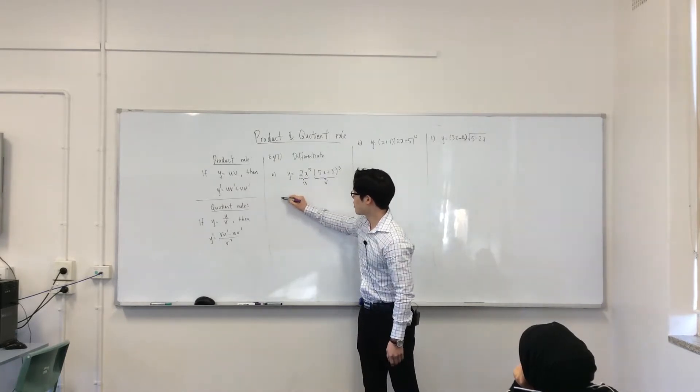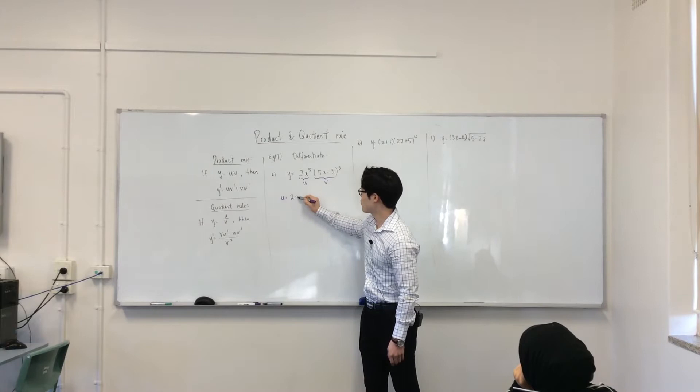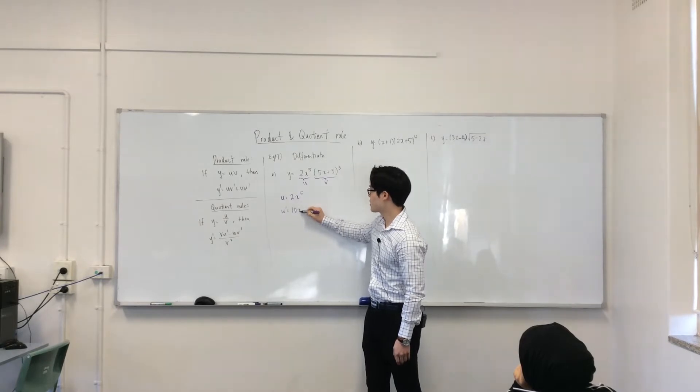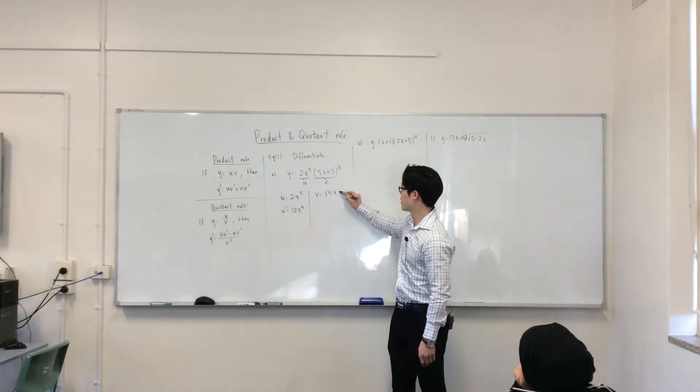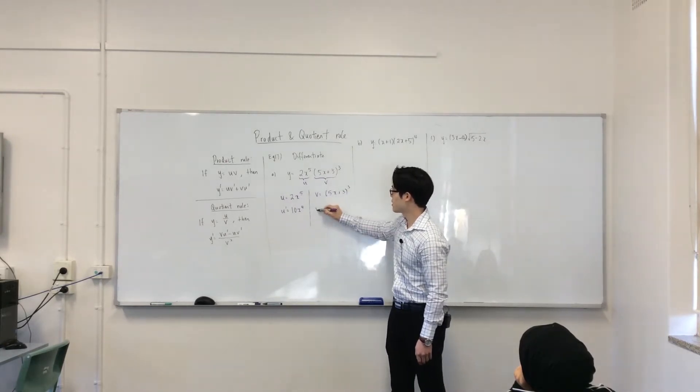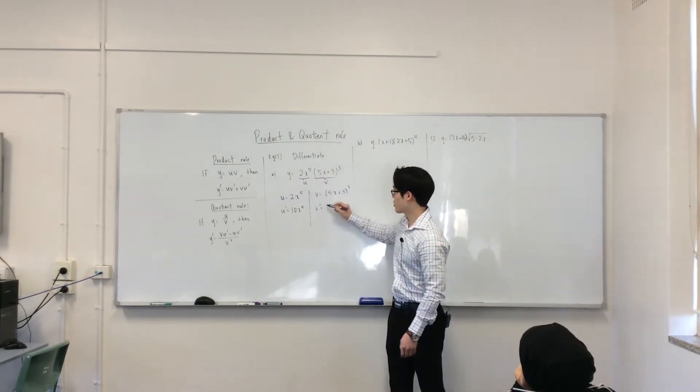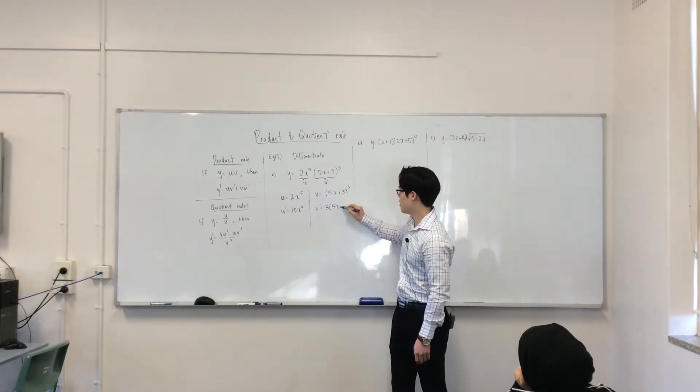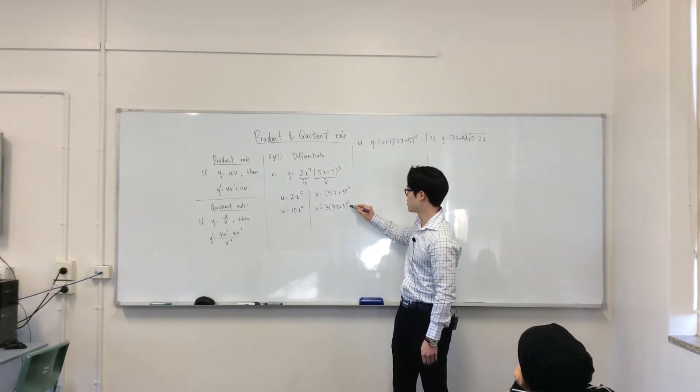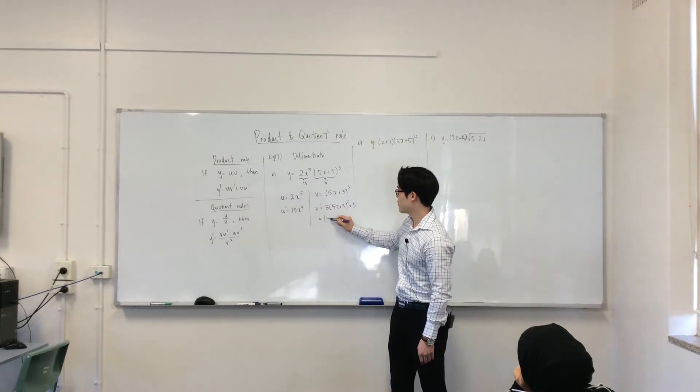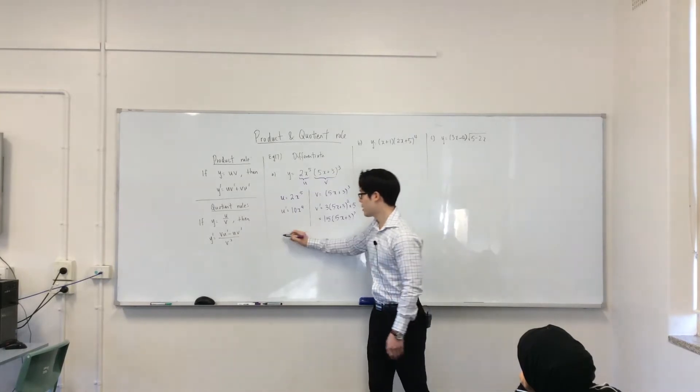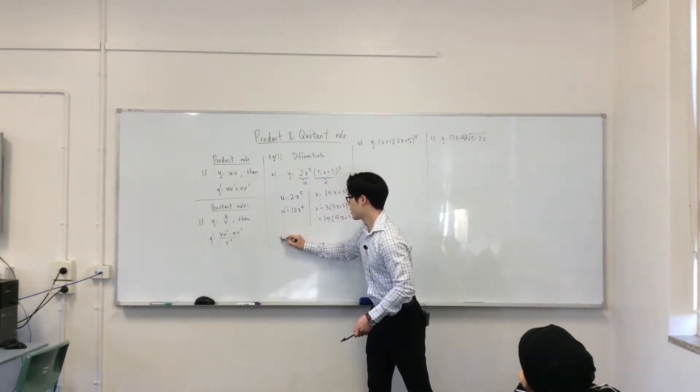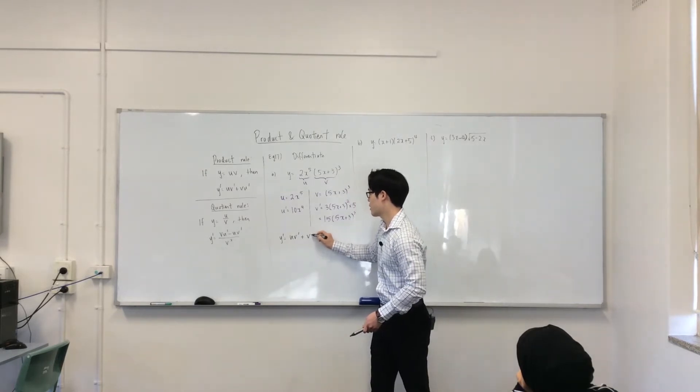So my U is 2x^5. What you need to do is differentiate that. If you differentiate that, that's 10x^4. Do the same thing with V. Let me write V out separately. If I differentiate this from last lesson we learned the chain rule, what is it? Bring the 3 down, and then to the power of 2 times 5. So my V dash is 15(5x + 3)^2.